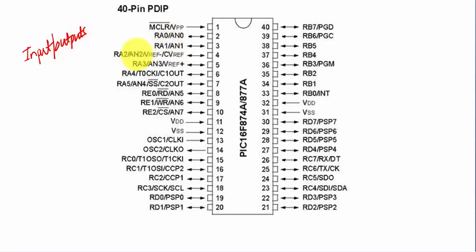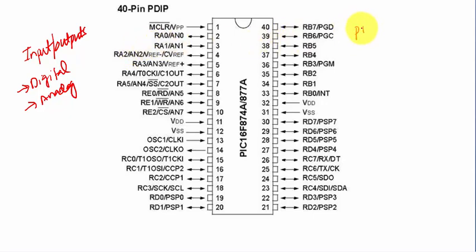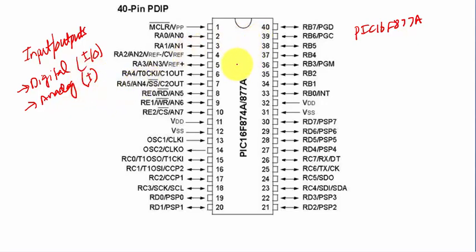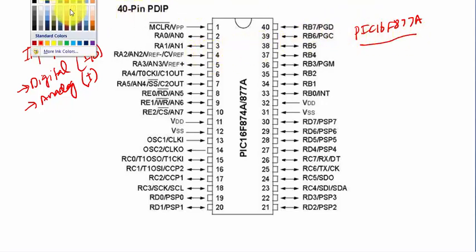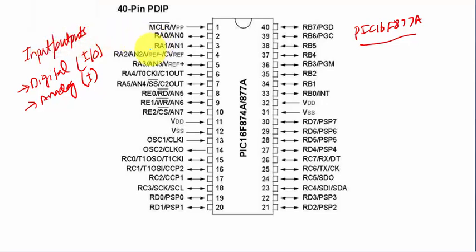PIC microcontrollers have input/output ports to interact with the external world. You can use these pins as digital input, analog input, or analog output. However, the PIC 16F877A microcontroller only supports digital input/output and analog input — not analog output. In this tutorial, I will show how to use the PIC 16F877A ports as digital input and output.